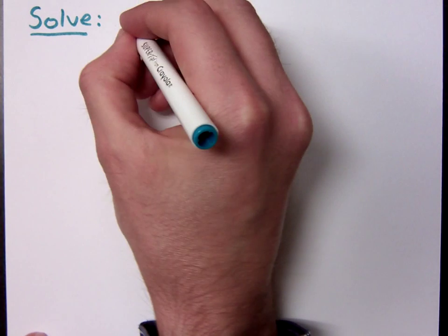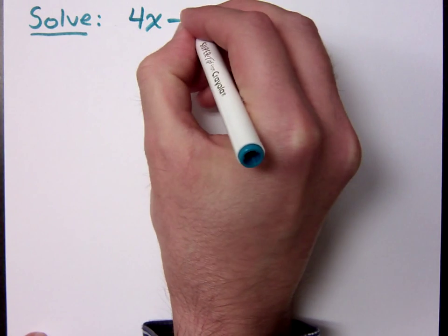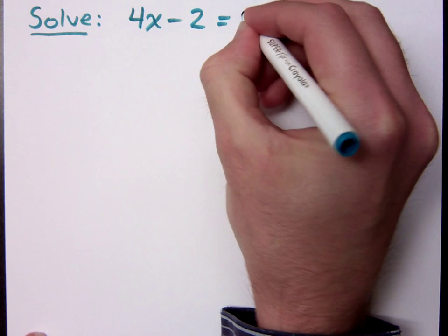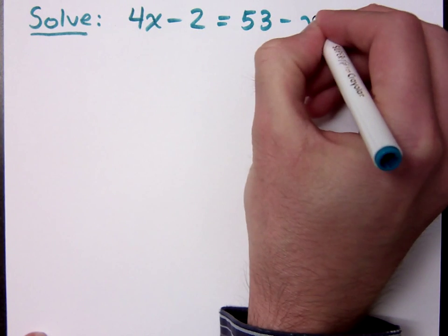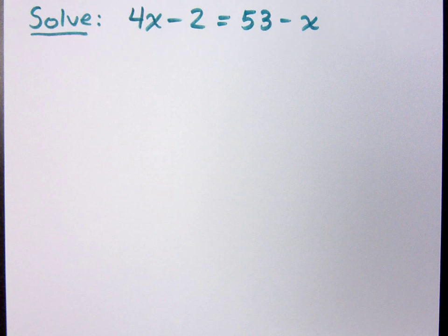So let's look at this equation here, 4x minus 2 equals 53 minus x. Now remember that our goal here is to separate your variables from your constants, get them on opposite sides of your equation.